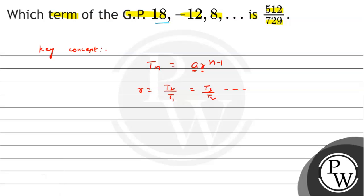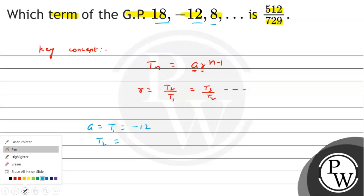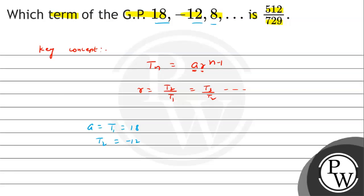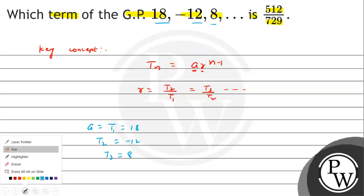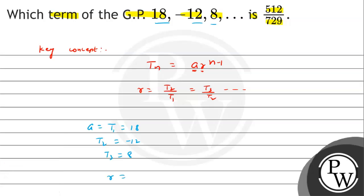Let's look at our series. The first term a is -18, the second term is -12, and the third term is 8. So here we have the common ratio: second term by first term gives us -2 by 3. And this is a GP, so -2 by 3 is our common ratio.